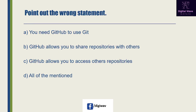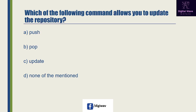Next option: point out the wrong statement. Option A is 'you need GitHub to use Git', option B is 'GitHub allows you to share repositories with others', option C is 'GitHub allows you to access other repositories', and the last option is all of the mentioned. The right answer will be A, because GitHub can store a remote copy of your repository but you do not need GitHub to use Git.